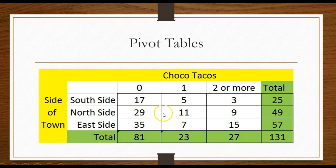But looking at this pivot table what we have here is three sides of town: the south, the north, and the east. And the number of Choco Tacos that a customer bought.